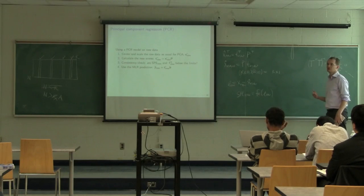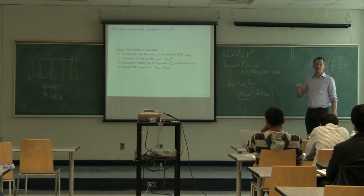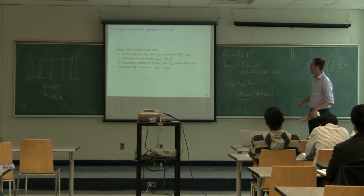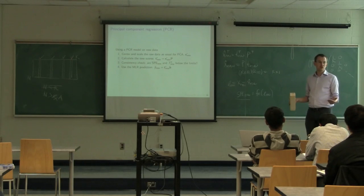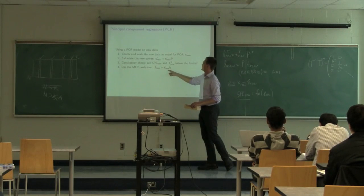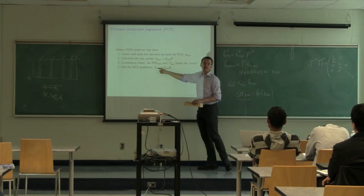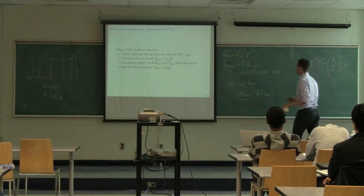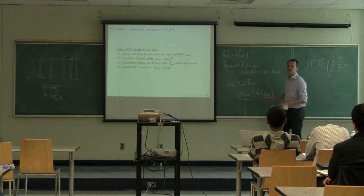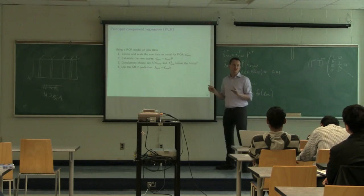If both SPE_new and T-squared_new are below the limit, I go ahead with the multiple linear regression step and make the prediction. But if either is above their respective limits, it tells you the point is either off the plane, way out on the plane, or both. You can still proceed to step two and compute T_new times B from the MLR step — nothing prevents you from getting a prediction — but at least you've been warned that something may be wrong. Least squares doesn't do this for you at all.